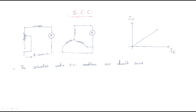In this session we will discuss SCC and OCC. SCC means short circuit characteristics and OCC means open circuit characteristics. These are useful to study whenever the alternator is short-circuited, and what the characteristics are when the alternator is open-circuited.